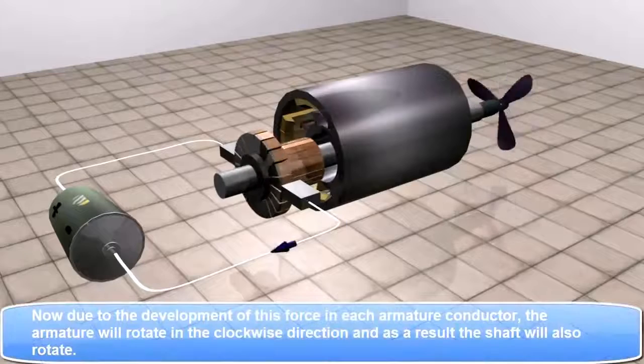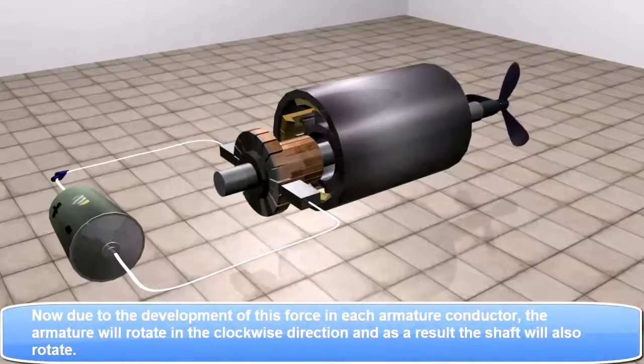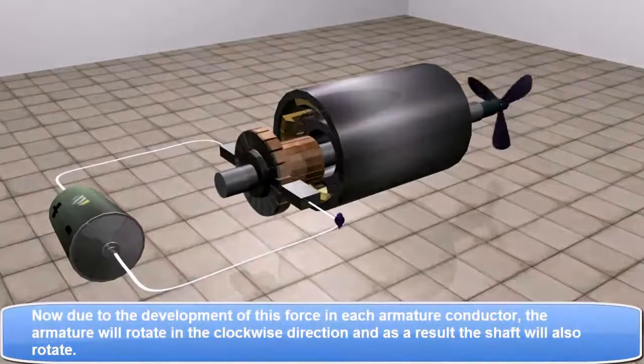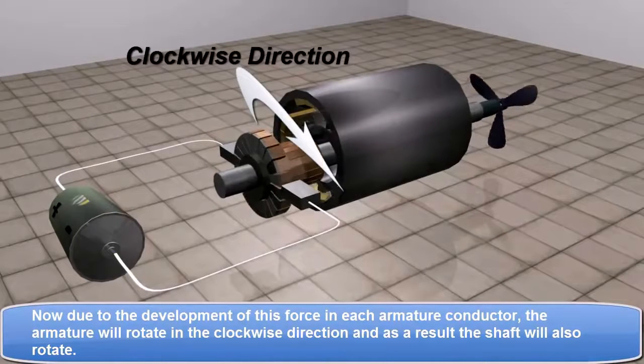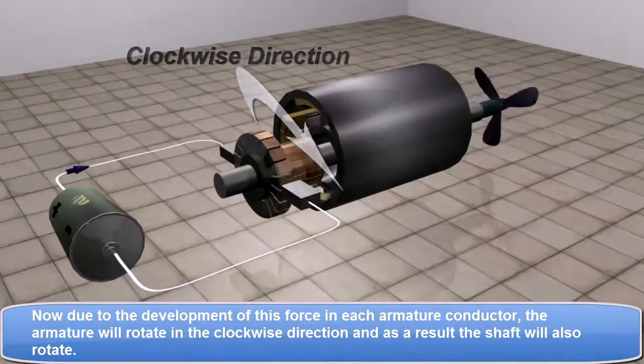Now, due to the development of this force in each armature conductor, the armature will rotate in the clockwise direction. And as a result, the shaft will also rotate.